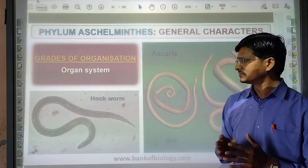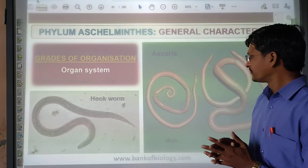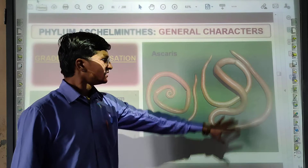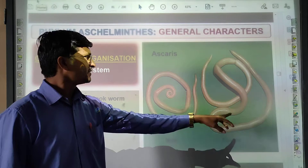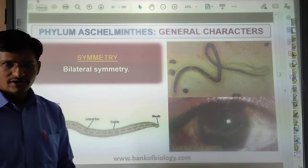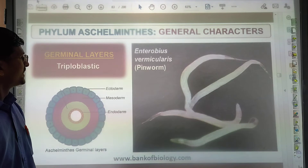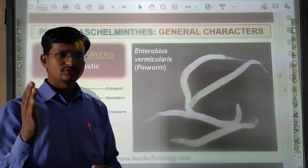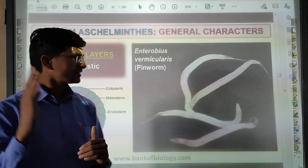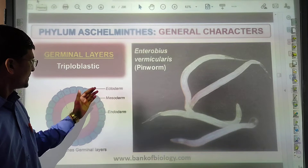According to the body organization and organ system, we can easily identify male and female Ascaris. The body is bilaterally symmetrical. The germ layers are triploblastic — all three layers are present. In the three layers you will see ectoderm, mesoderm, and endoderm.